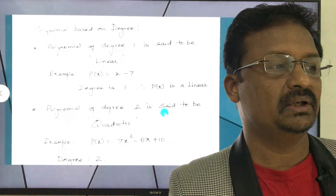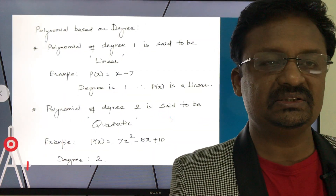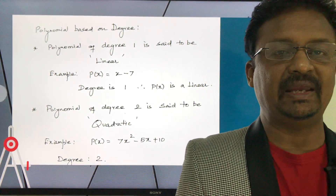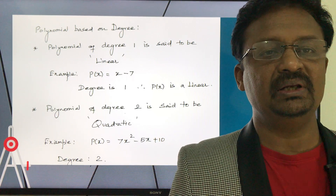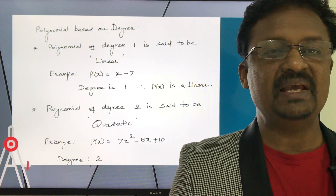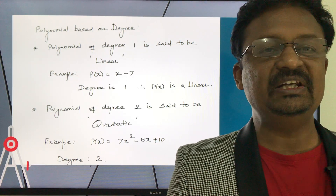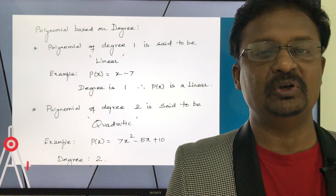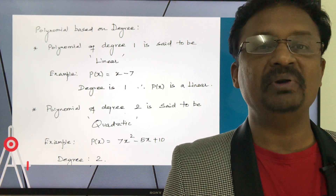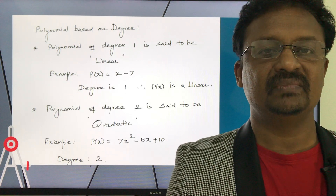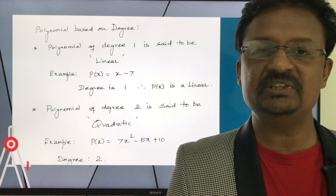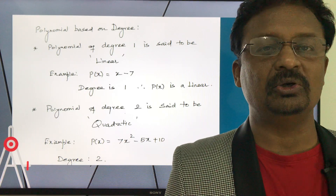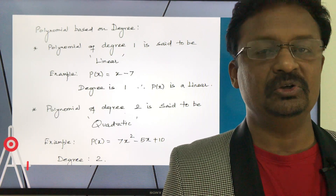Polynomials can be classified based on their degree. If the degree of the polynomial is 1, it is called a linear polynomial. For example, x - 7 has degree 1, so it is called a linear polynomial.